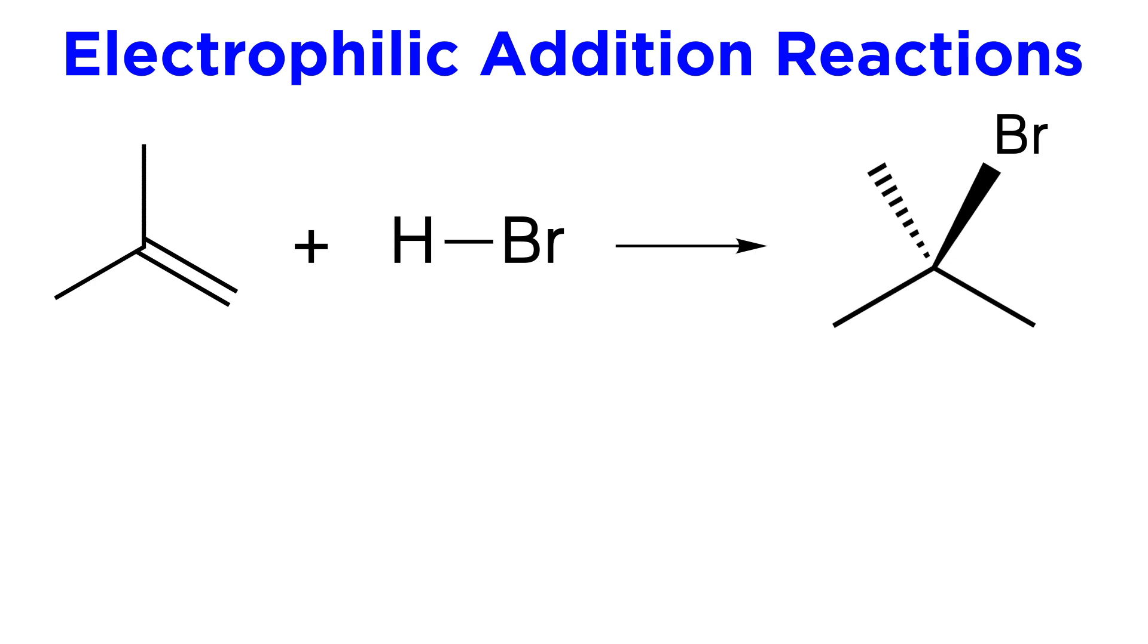For example, here is 2-methylpropene reacting with hydrogen bromide. This will yield 2-bromo-2-methylpropane. Let's go over this very simple mechanism.